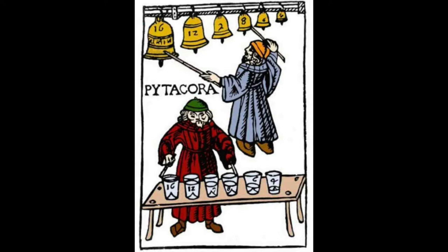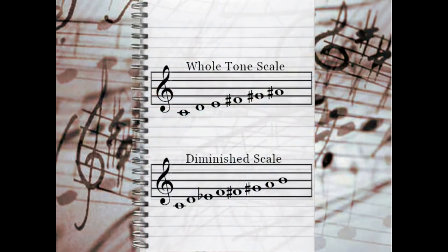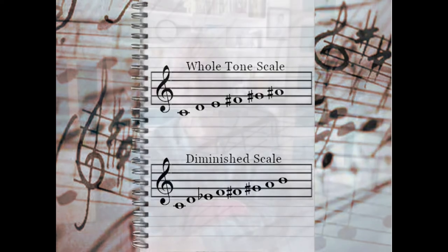Pythagoras got the diatonic scale from nature herself by performing experiments with natural phenomena. The modern tweaked scales, or artificially constructed scales like the whole tone scale and the diminished scale, don't exist in nature, but I consider these to be diatonic because a valid triad can be constructed on each step of the scale. This is, to me, the ultimate criterion for what could be called a diatonic scale.